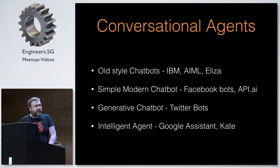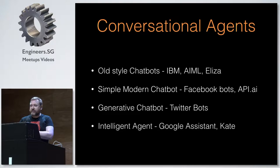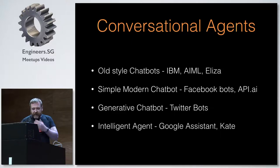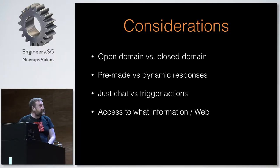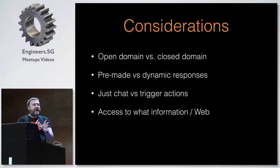IBM's Watson's public interface uses a similar system to that. Then we have what I call the simple modern chatbot, which is generally what you see on Facebook nowadays for any interaction. Then we have generative chatbots, like Twitter bots. And then the last one is an intelligent agent — things like Google Assistant. Big things to think about when building conversational agents: the first is open domain versus closed domain.